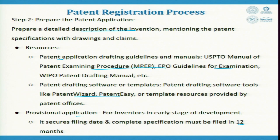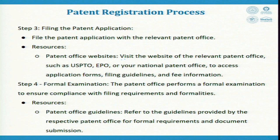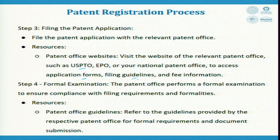Step 1 is searching, step 2 is preparing the application, step 3 is filing the patent application. File the patent application with the relevant patent office — you cannot do it in any office, it has to be the relevant one. Visit the patent office's official website to get details such as USPTO, EPO, or your national patent office, to access the application form, filing guidelines, and fee information.